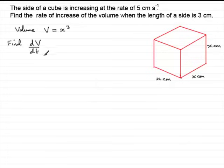Rate of change of volume. We've got to find this when the side x, or whatever letter you defined the sides as, when the length of the side is 3 cm, so when x equals 3.